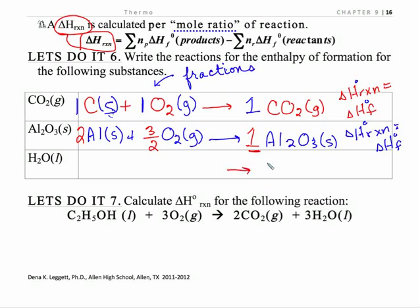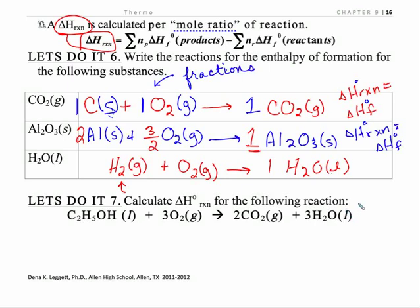For water liquid, we'd have one water — that has to be a one. Watch your states. I'm going to make it from hydrogen gas, because from its elements diatomics are their natural state — it doesn't matter what phase it is, a diatomic is diatomic when it's pure. Plus oxygen gas. And now I have to balance this such that the product is one, which means I do have to put one-half in front of my oxygen. So that's what a delta H of formation means.